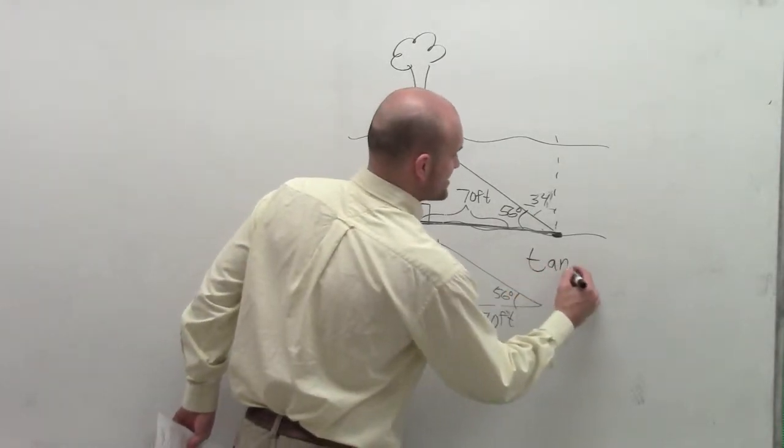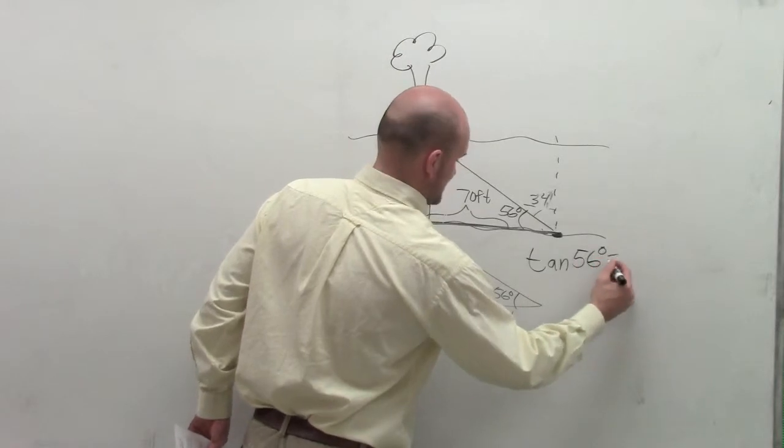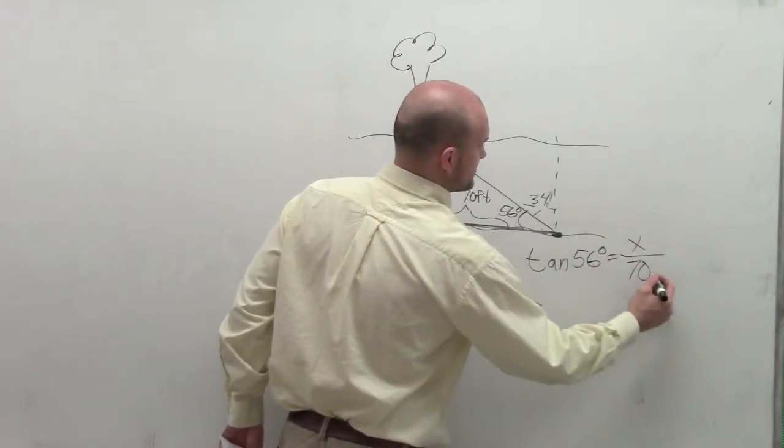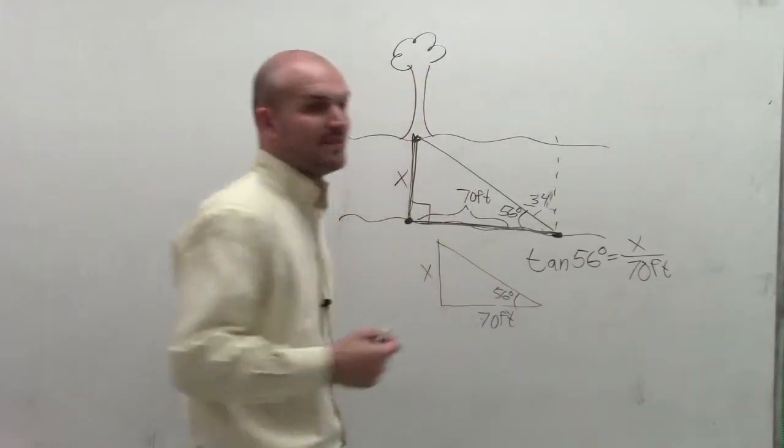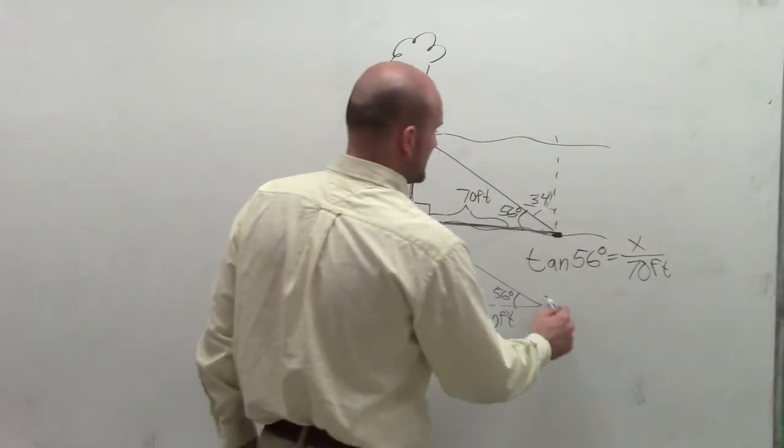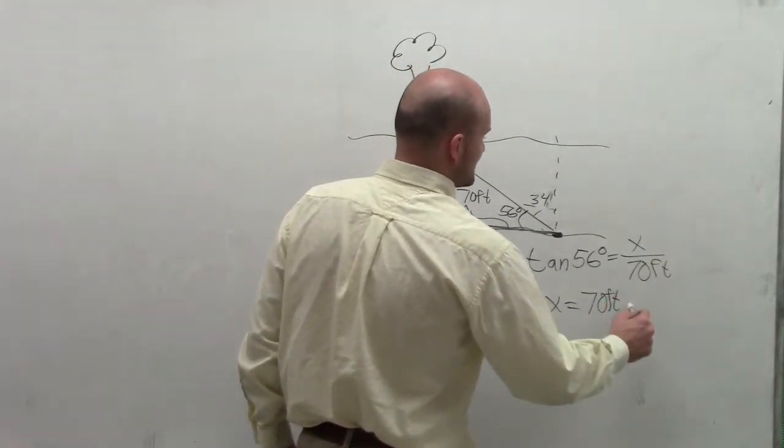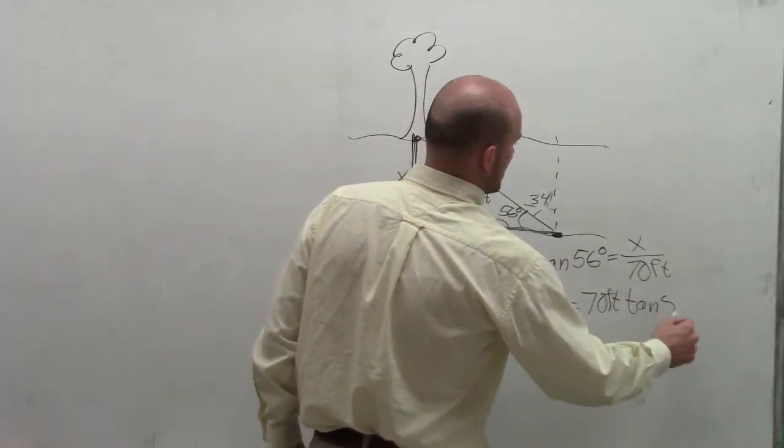So I could write tangent of 56 degrees is equal to my opposite over my adjacent. Therefore, multiplying by 50 feet, I'm now going to get x by 70 feet. I get x equals 70 feet times the tangent of 56.